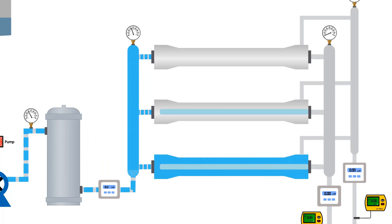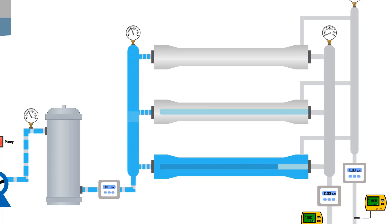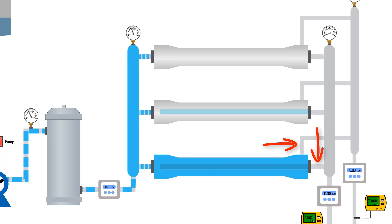As the solution passes through the membranes, it interacts with the calcium and magnesium content present in the membranes and tries to dissolve them. Each membrane has two outlets: permeate and reject.